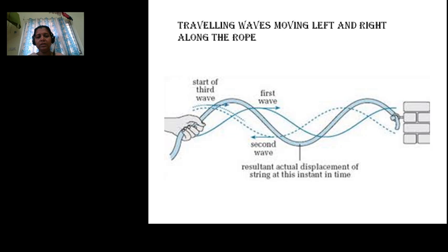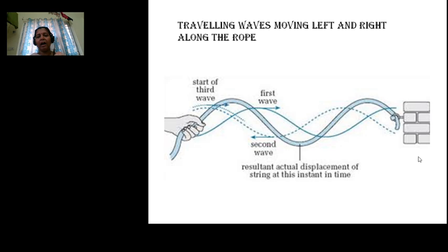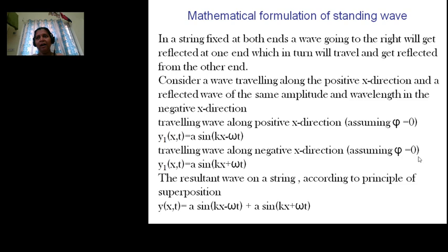In musical instruments, both ends are fixed. When a string is fixed at both ends and a traveling wave is generated, it travels in the positive x direction, reflects from the end, and moves in the negative x direction. The incident and reflected waves have the same amplitude, same wavelength, and same frequency, but one moves in the positive x direction and the other in the negative x direction.